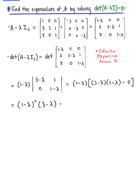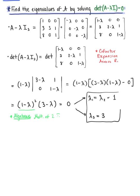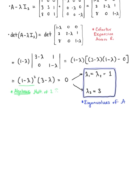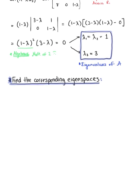Setting this characteristic polynomial equal to 0 gives us our characteristic equation. Applying the zero factor property, we see that our first binomial has algebraic multiplicity 2 — that factor appears twice — so lambda sub 1 equals lambda sub 2 equals positive 1. With our second binomial having multiplicity 1, lambda sub 3 equals 3. These are our eigenvalues.